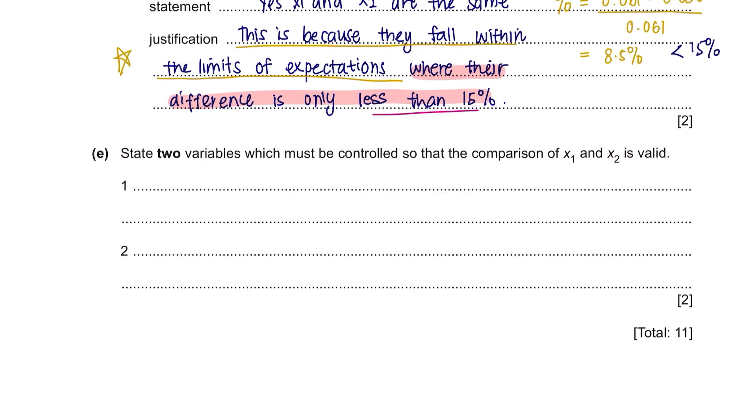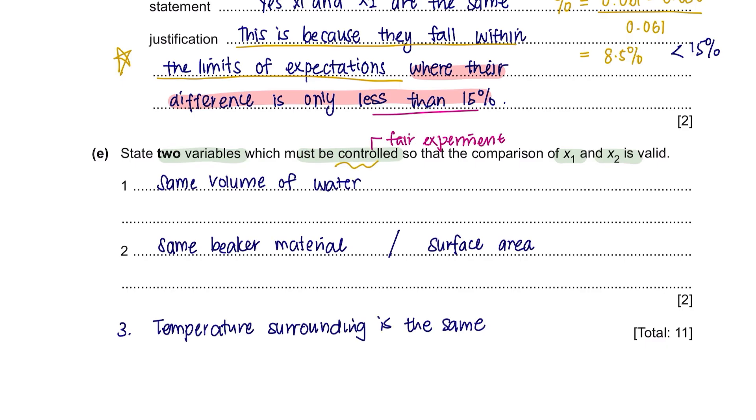Question E. State two variables which must be controlled so that the comparison of X1 and X2 is valid. The variables that have to be kept same to ensure the experiment is fair: use the same volume of water and beaker.